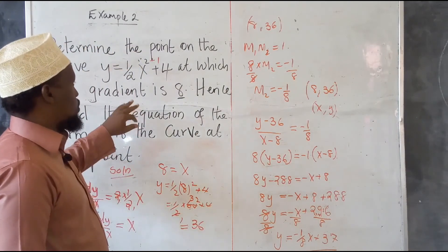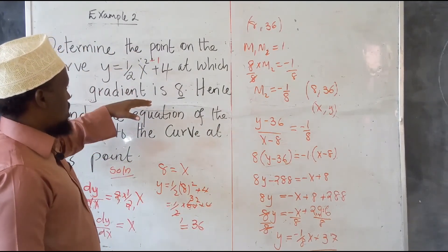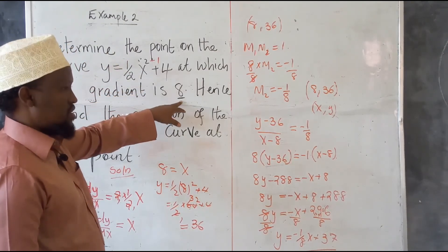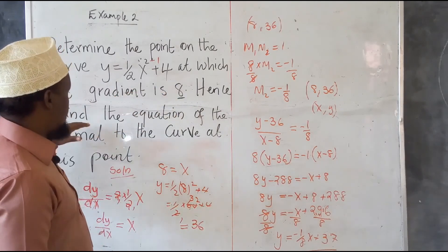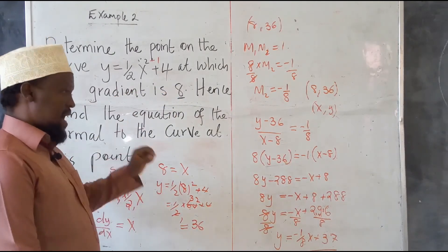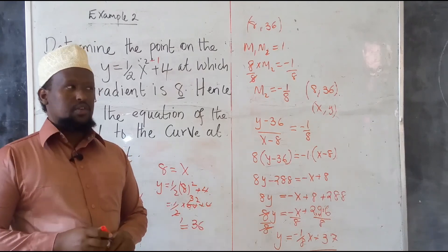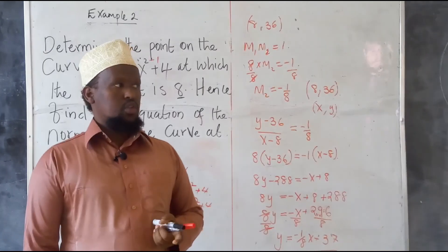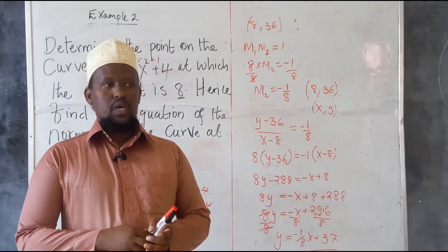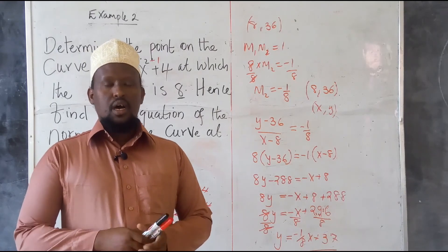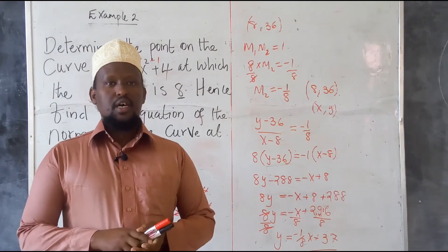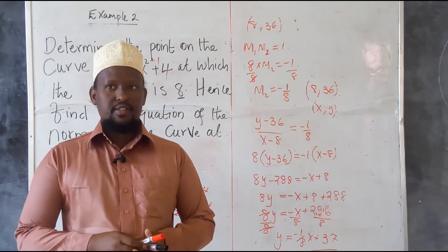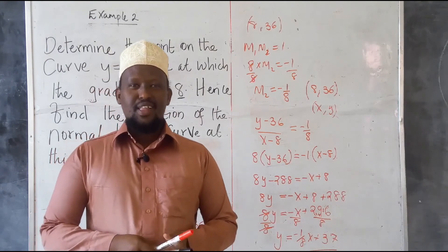That is how you approach this kind of question. When you are not given the point, you first find the point on the curve whose gradient equals the given value, then find the equation of the normal at that point. Thank you very much for watching. Make sure you subscribe, like, and share with your friends. Stay safe, keep distance, and sanitize.